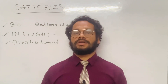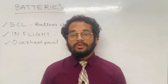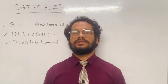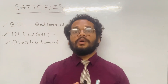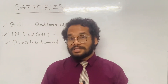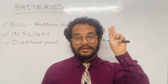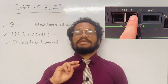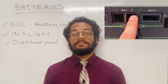When the aircraft is on the ground with battery push buttons in AUTO and no other electrical power available, the battery contactors will automatically open to prevent the batteries from discharging completely. To reset the contactors, simply set the battery push buttons to OFF and then back to AUTO.